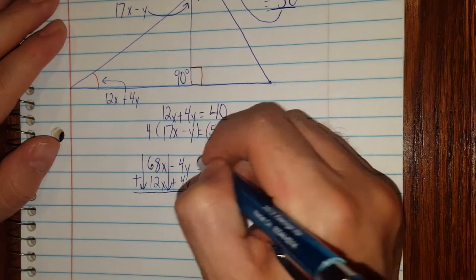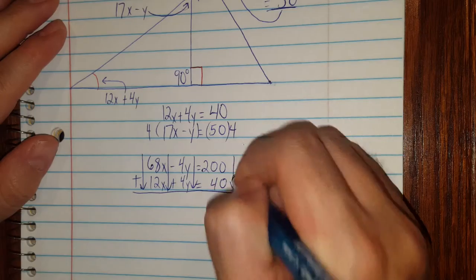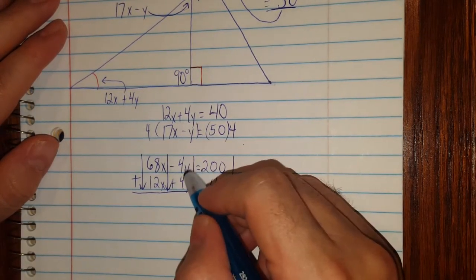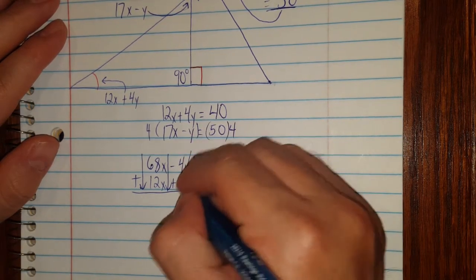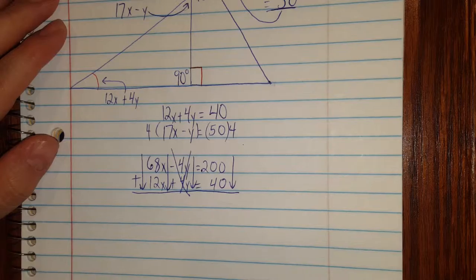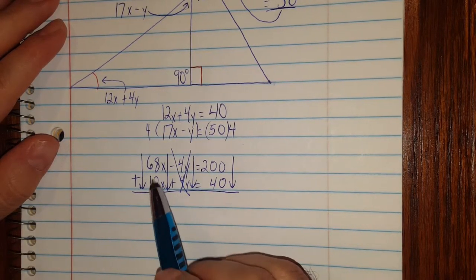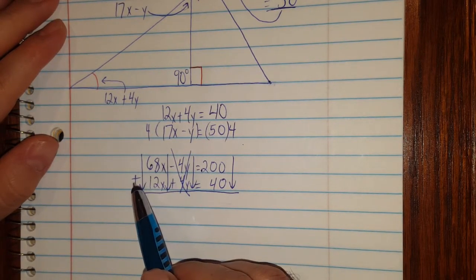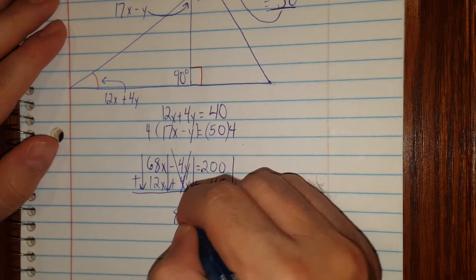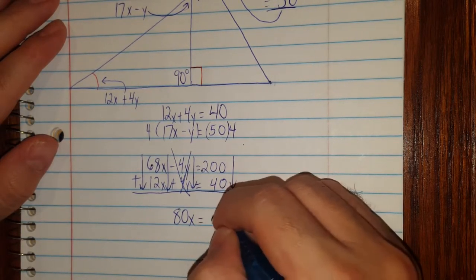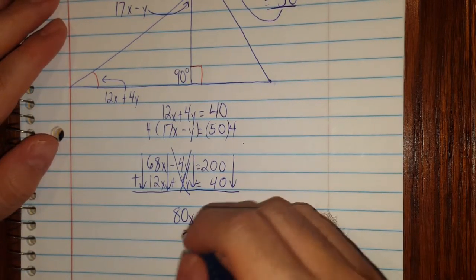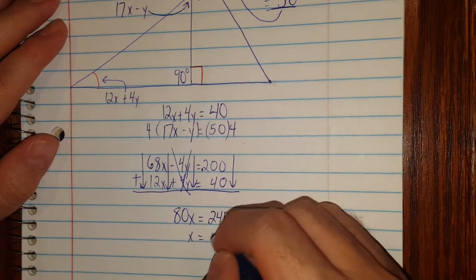And the reason is when I go ahead and add these together, and when I say add them I do mean add straight down like this, when I do that I notice that a minus 4y adding a 4y will cancel out those two variables or eliminate them, which is exactly what I wanted. Now I can just do 68x plus 12x, 80x is equal to 240, and when I divide both sides by 80, I get x equals 3.